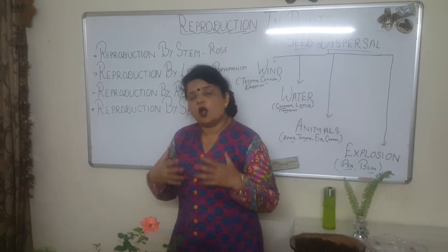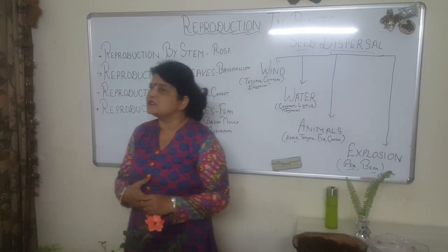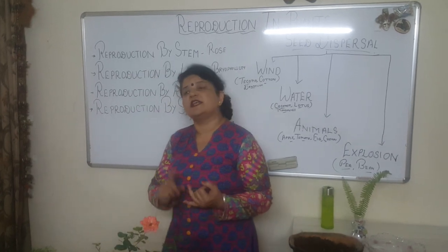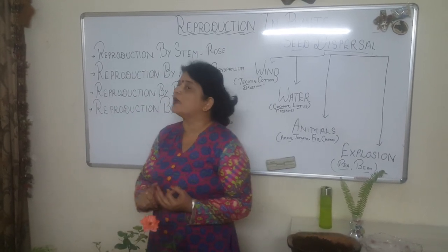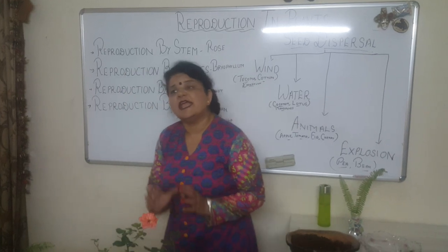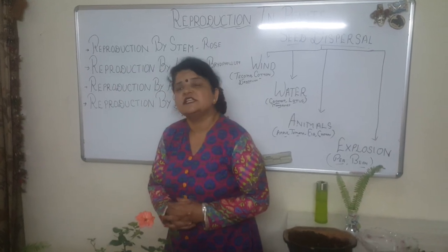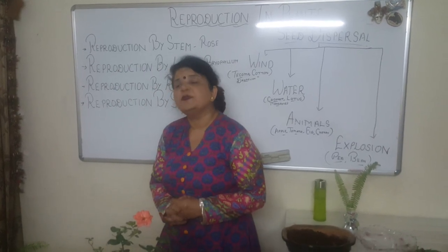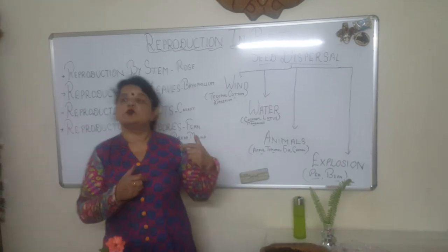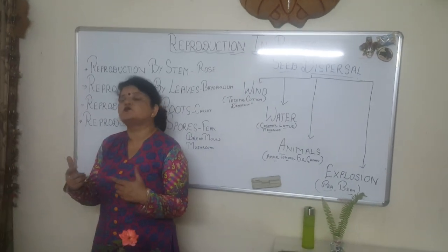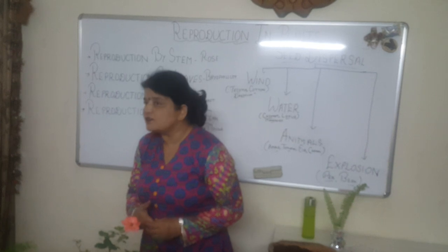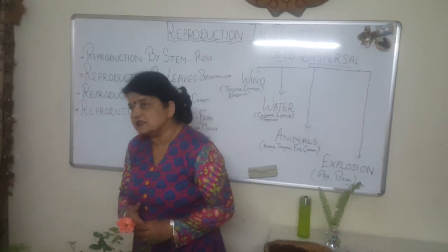We all help in seed dispersal. Birds, human beings, and animals are all biotic agents of seed dispersal. Wind and water, on the other hand, are the abiotic agents of seed dispersal.